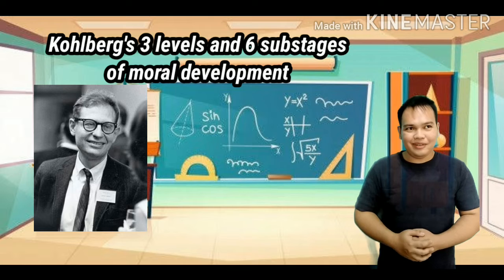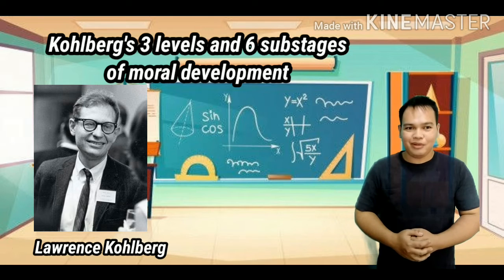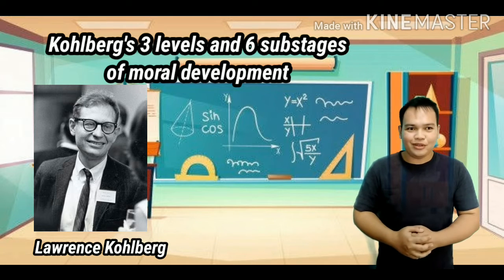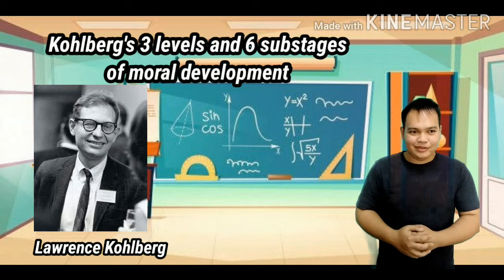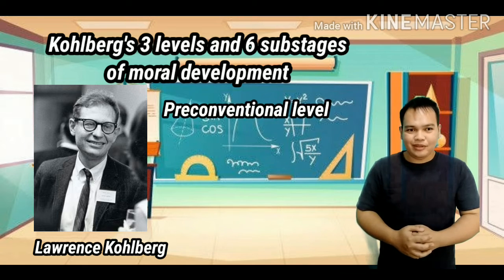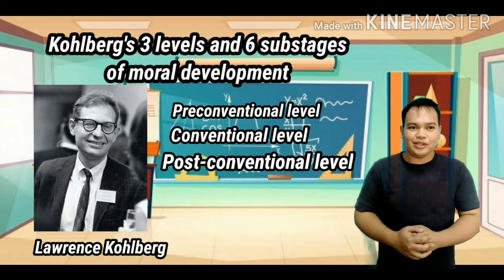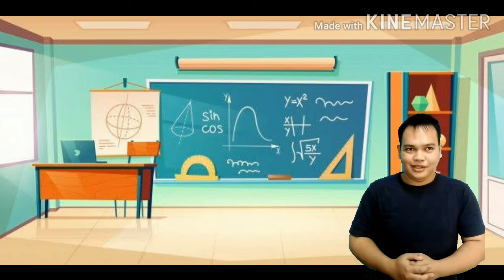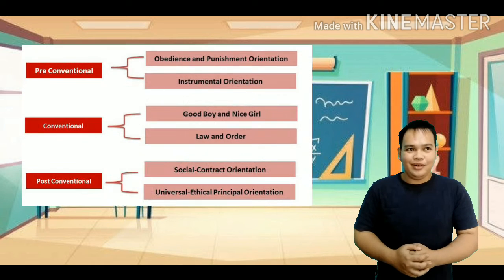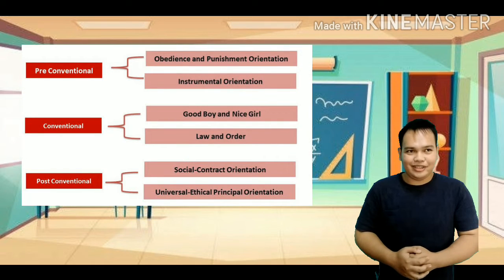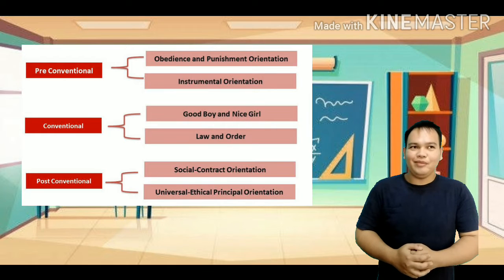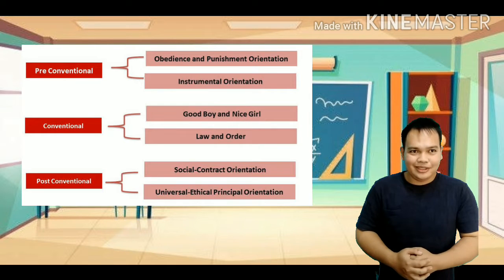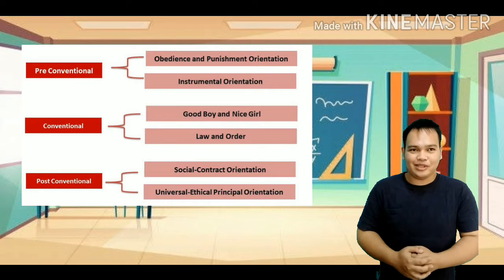Kohlberg's three levels and six stages of moral development. According to Kohlberg, there are three levels of moral development: the pre-conventional, conventional, and post-conventional. Each level has two distinct stages. During the pre-conventional level, a child's sense of morality is externally controlled. Children accept and believe the rules of authority figures, such as parents and teachers, and they judge an action based on its consequences.